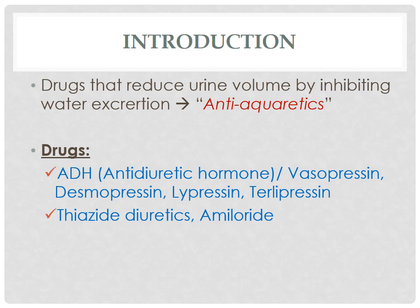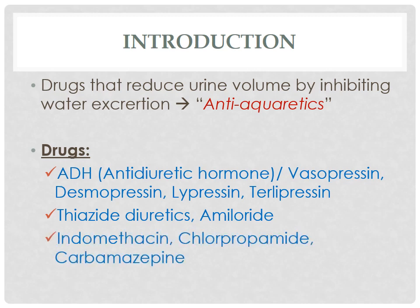Another group of drugs includes thiazide diuretics and amiloride. This group of drugs acts primarily as diuretics, but in case of diabetes insipidus they act as anti-diuretics, which is their paradoxical effect, and we will see its mechanism later. Miscellaneous drugs are indomethacin, chlorpropamide, and carbamazepine, which are not primarily used as anti-diuretics — anti-diuresis is a side effect of these drugs.